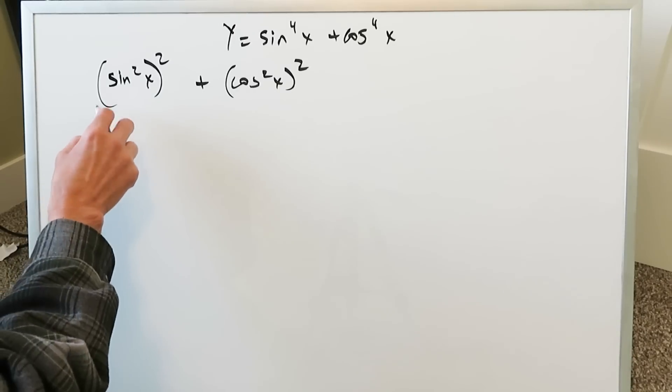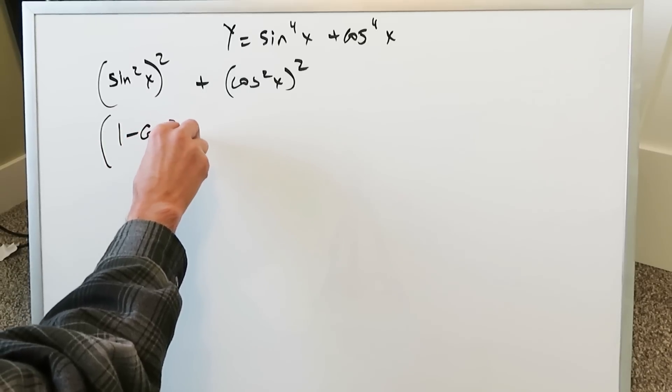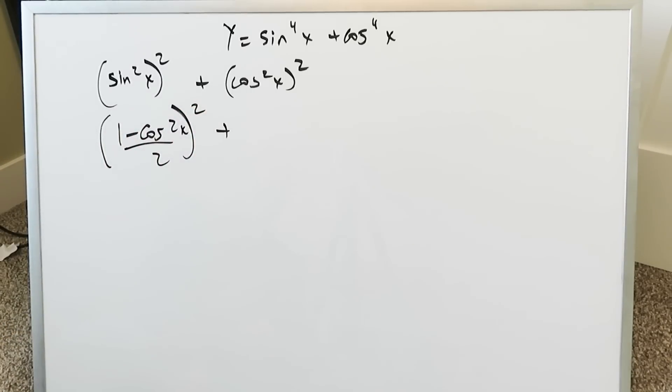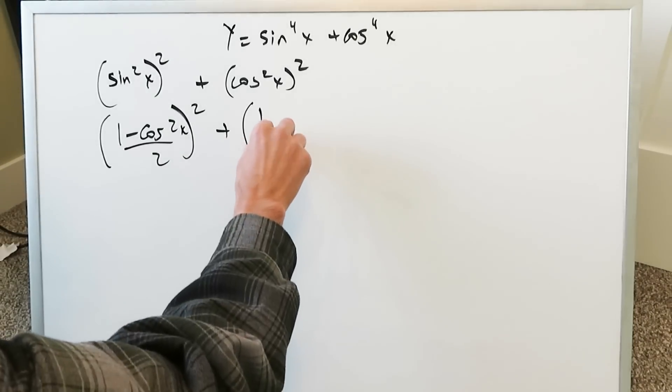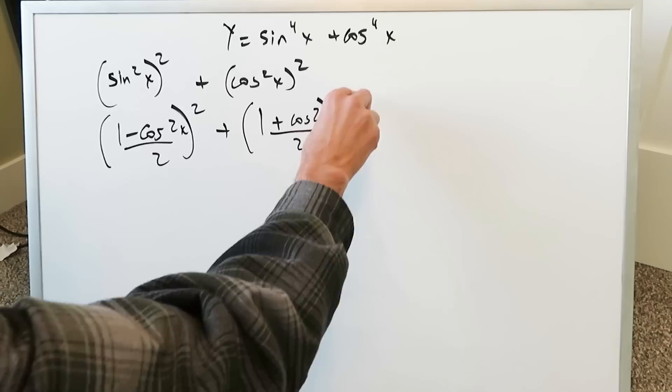I know the sine square x in terms of the power reducing is 1 minus cosine 2x over 2 and then you have a square sitting outside, and then the cosine square x by means the power reducing is 1 plus cosine 2x over 2 and you square that.